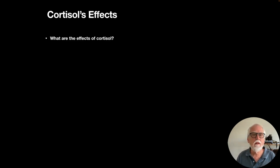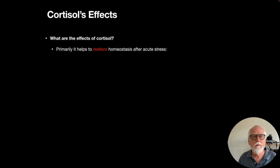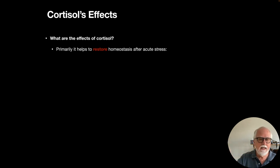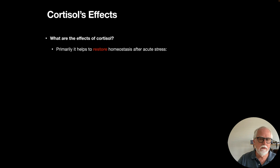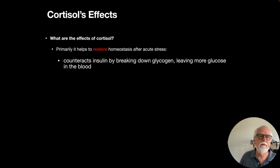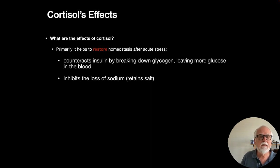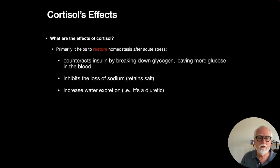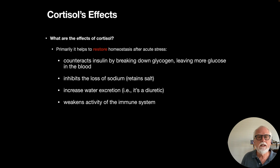Why does the body release all that cortisol? Primarily it helps restore homeostasis after acute stress. The brain senses stress, CRH is released, then ACTH, then cortisol. Cortisol counteracts insulin by breaking down glycogen, leaving more glucose in the blood; it inhibits sodium loss, retaining salt; it increases water excretion, acting as a diuretic; and it weakens immune system activity, making you more likely to become sick when cortisol levels are higher.